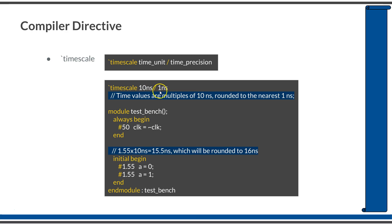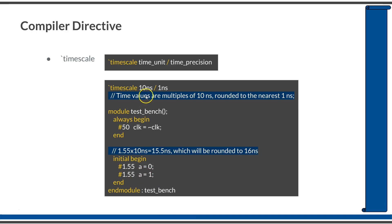Time precision comes into play when there is a fraction in the time delay. Consider the statement: initial begin #1.55; a = 0; end. After 1.55 time units, this is multiplied by the time unit: 1.55 × 10 = 15.5 nanoseconds. Since the time precision is 1 nanosecond, it is rounded to the nearest 1 nanosecond, which equals 16 nanoseconds. Therefore this statement means: after 16 nanoseconds, a is assigned 0.